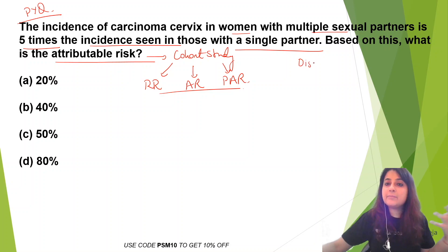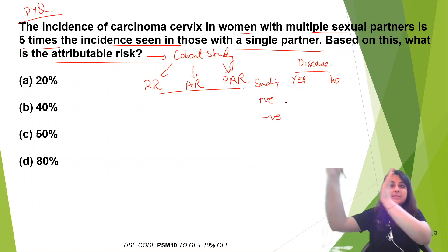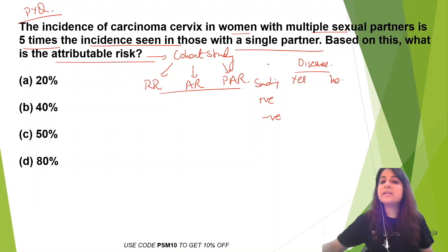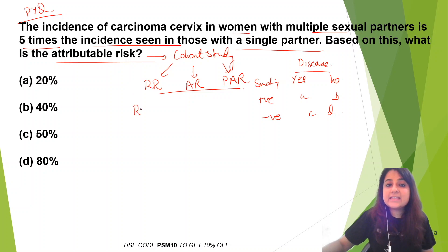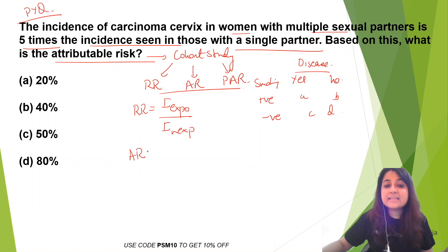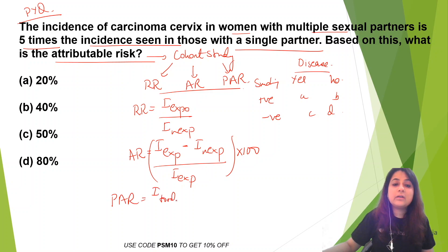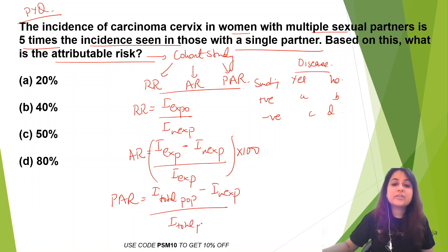Suppose we are studying a risk factor and a disease — let's say lung cancer and smoking. Disease: yes/no; risk factor smoking: positive/negative, present/not present. Outcome is always on the column side and exposure on the row side. Relative risk = incidence among exposed divided by incidence among non-exposed. Attributable risk = (incidence among exposed minus incidence among non-exposed) divided by incidence among exposed, multiplied by 100. Population attributable risk = (incidence among total population minus incidence among non-exposed) divided by incidence among total population, multiplied by 100.